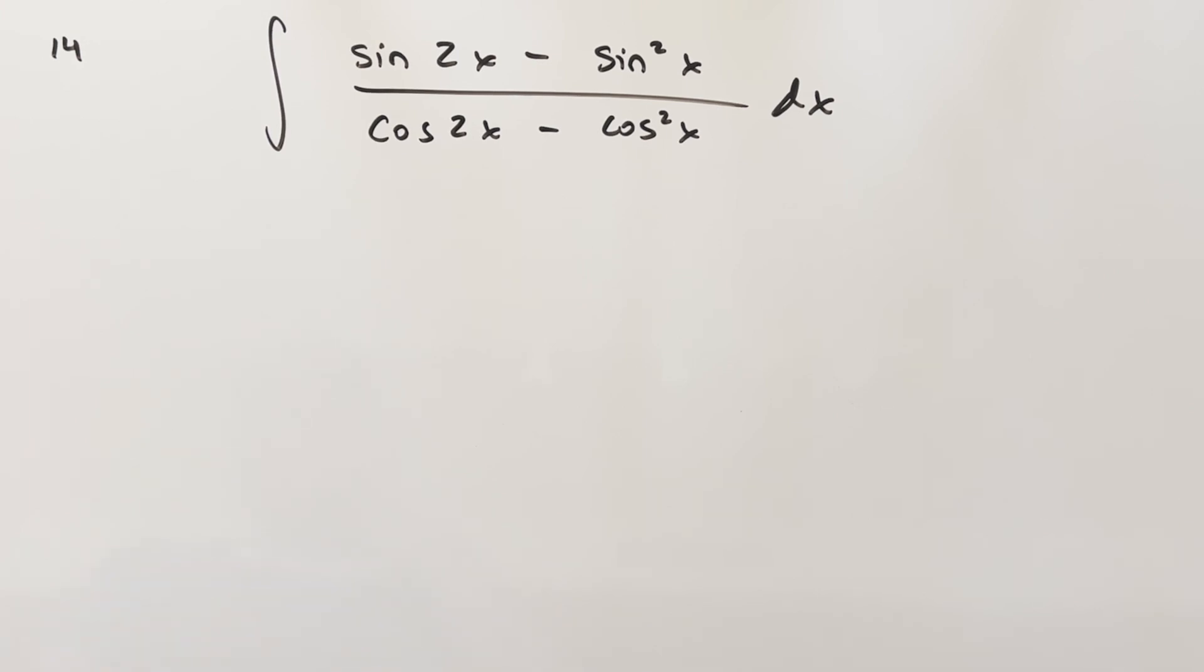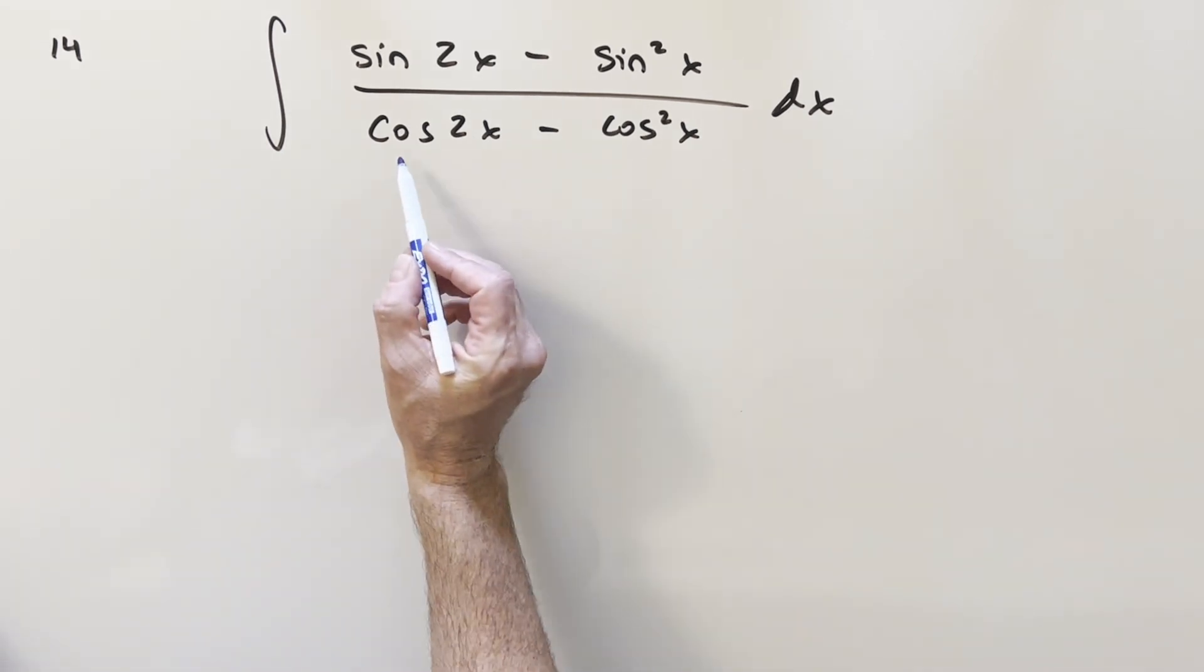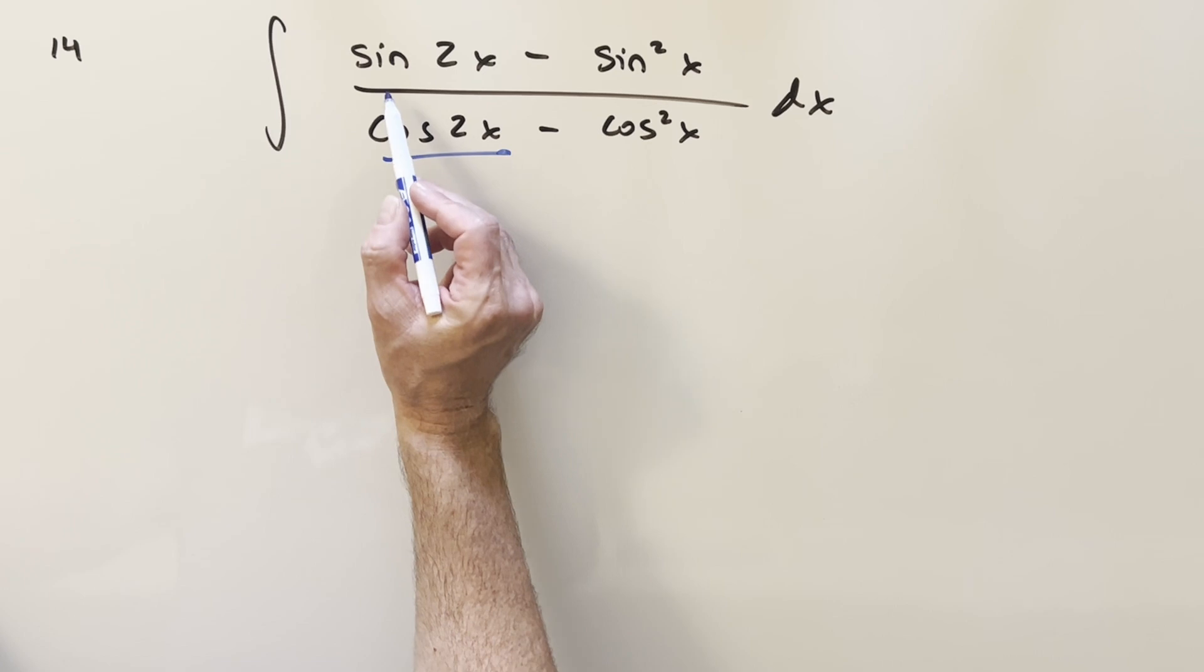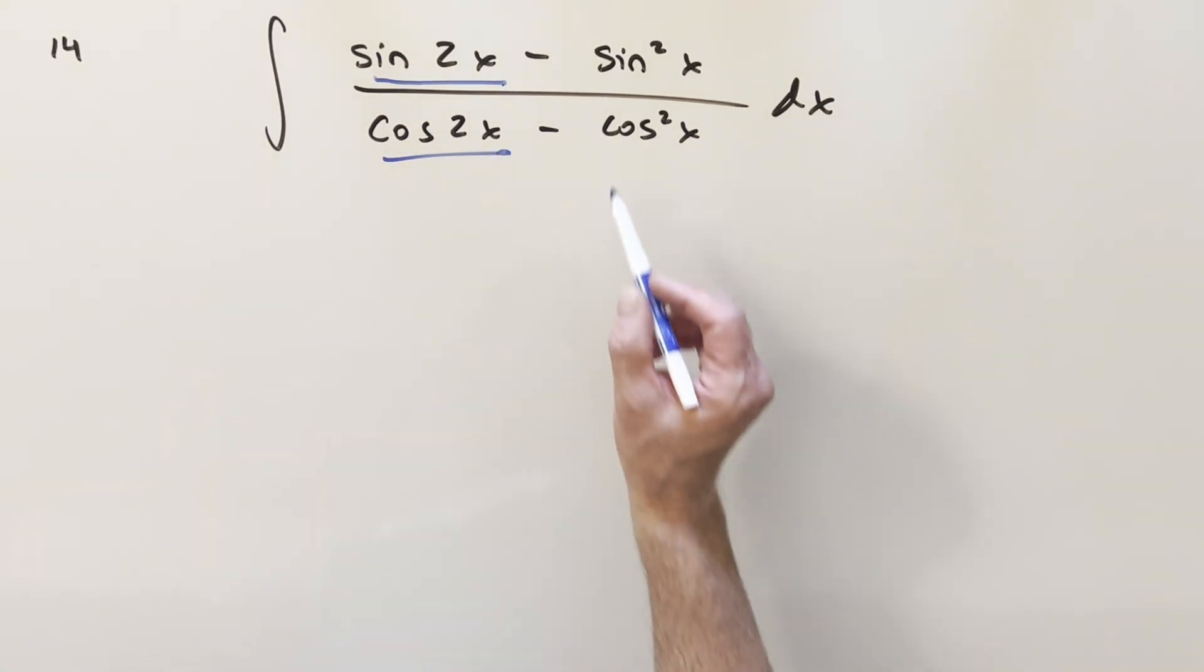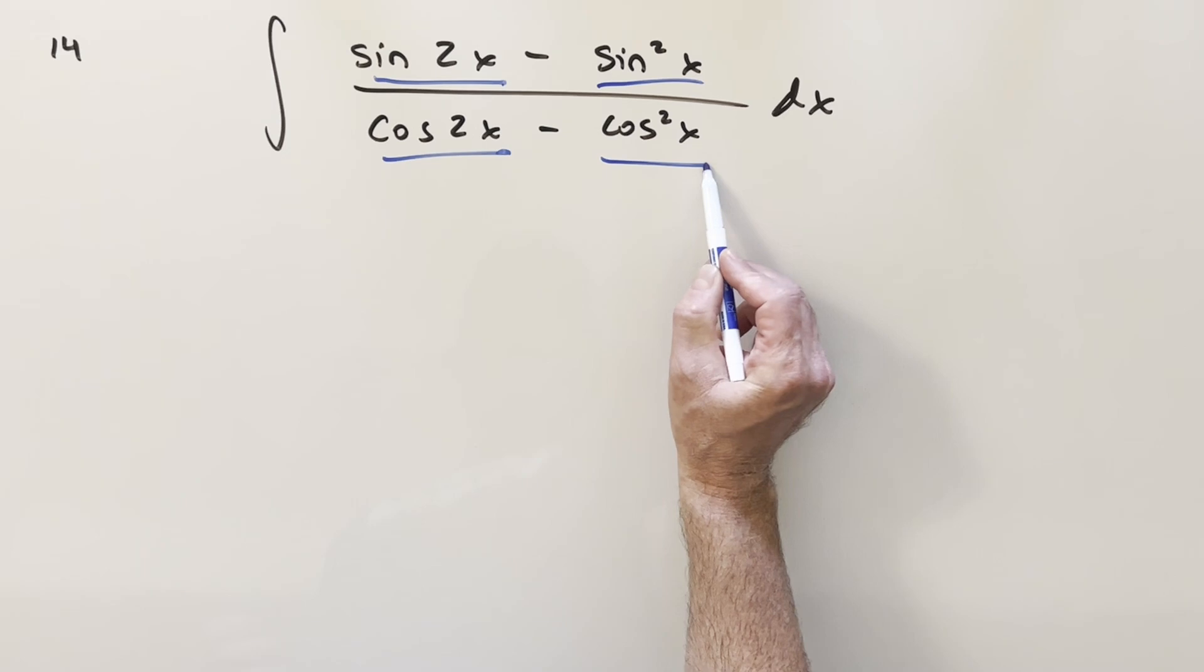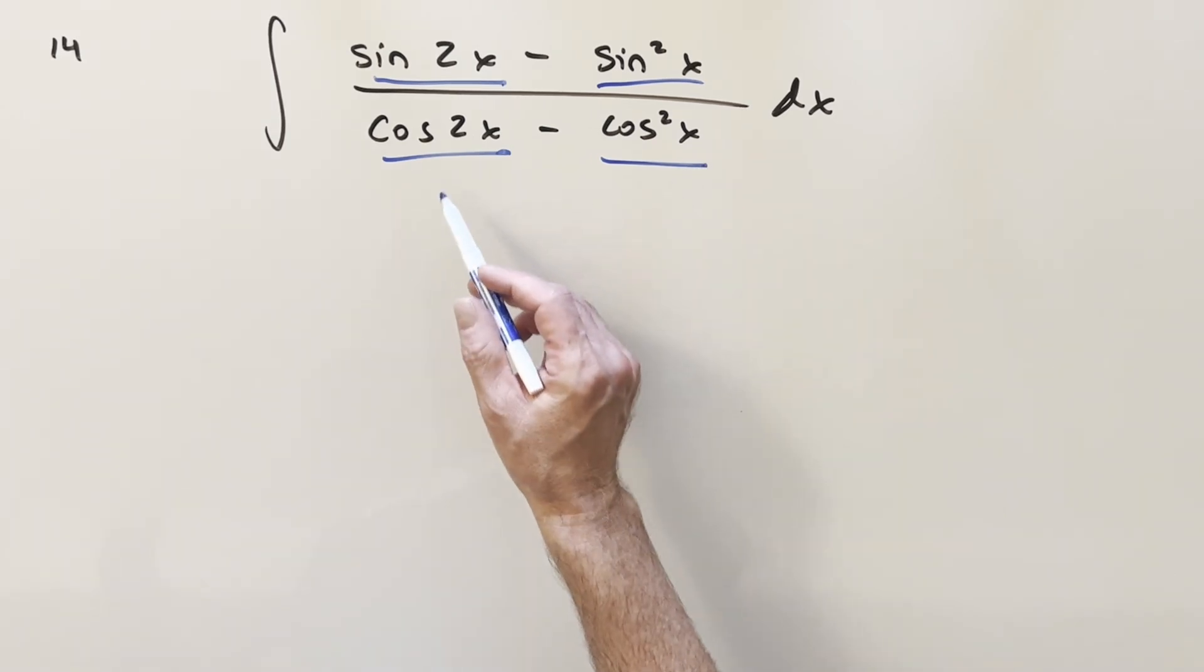Okay, to get started with this, the thing I thought was interesting was there has to be like a million ways to do this one because there's so many options. We can use trig identities on any one of these things. We can use double angle formula here and here, or we could use power reduction here and here to get everything as a double angle. There just seems to be a lot of different options.